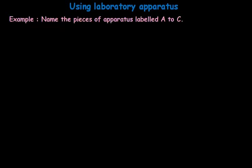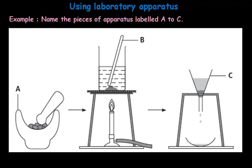Now let's take an example. Here is one commonly asked question in Paper 6: name the pieces of apparatus labeled A to C. Looking at the picture, the apparatus were already seen in the earlier part of this video, so they can be easily labeled. A is mortar, B is the glass rod, and C is filter funnel.